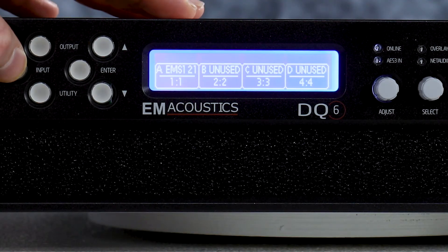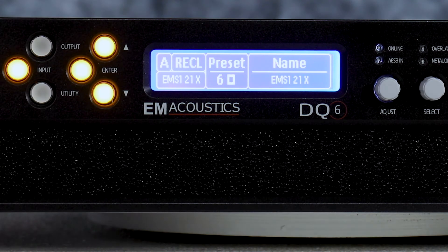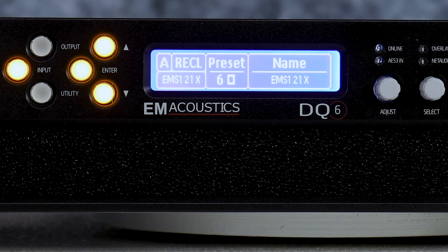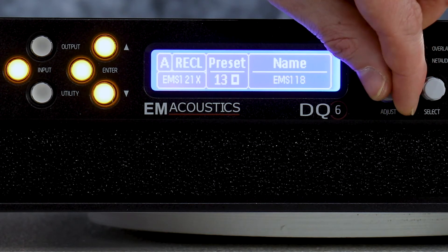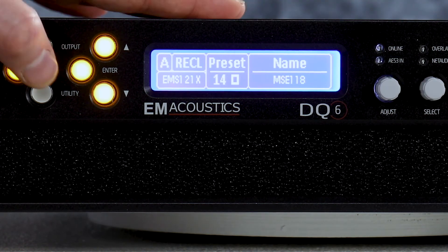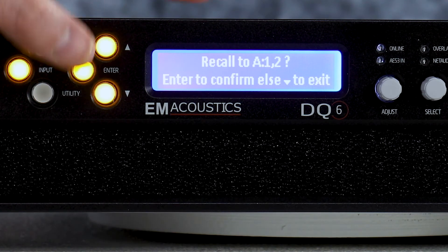To recall a preset, press the input key once. This will take you to input A. Press the down key once, and this gets you into the preset recall screen. You then use the adjust rotary encoder to select the preset you want to recall and press the enter key. The display will then ask you to confirm and simply press the enter key again.